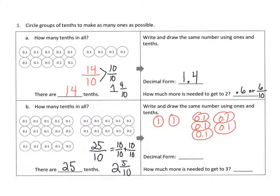So now we can say: what's our decimal form? We've got two wholes and we have five-tenths — so 2.5. How much more do we need to add to two and five-tenths to get to three wholes? It would be another five-tenths to get to that ten-tenths, which would bring us to our next whole, which would be three.